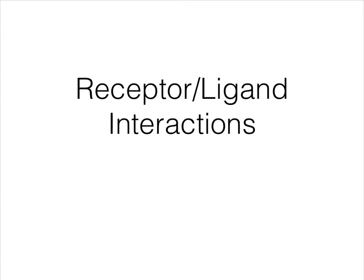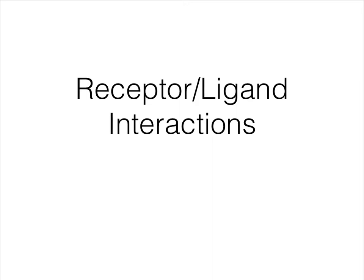A receptor is a protein that is usually going to be found in the membrane — not always, as we'll see in the next video, but usually found in the membrane. And when it binds to the ligand, something awesome happens. Usually it conveys some sort of signal to the cell that tells the cell to do something, and then the cell does something. What the cell does is completely dependent upon what hormone hits it, what type of cell it is, and everything like that.